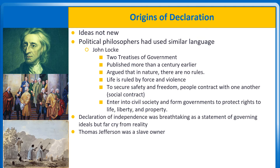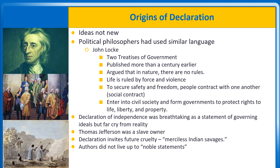As a statement of governing ideals, the Declaration of Independence was, and still is, breathtaking. In 1776, it was also a far cry from reality. Thomas Jefferson, who drafted much of the document, was a slave owner. The Declaration essentially invites future cruelty when it refers to merciless Indian savages. Its authors did not live up to their noble statements. We do not fully live up to them today. Even so, the document stands as the greatest statement of American idealism, something every generation can fight for.